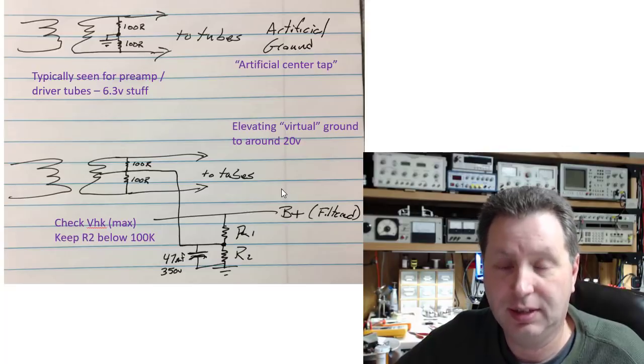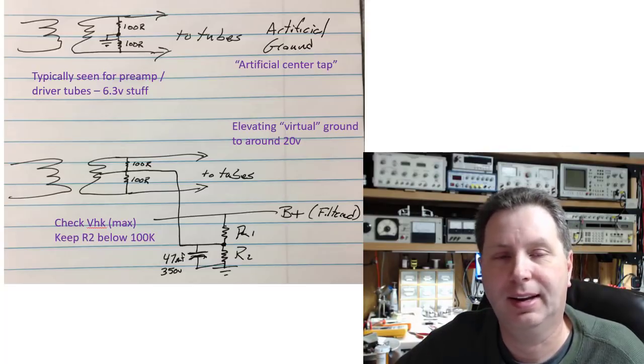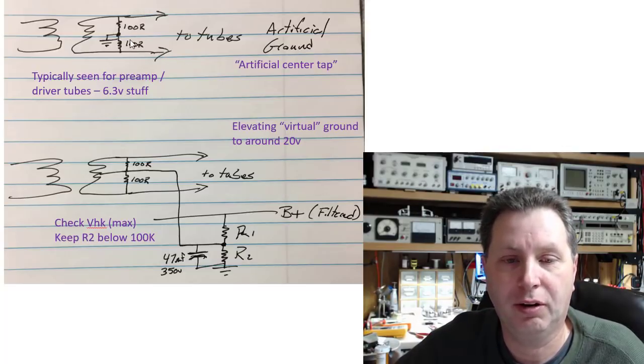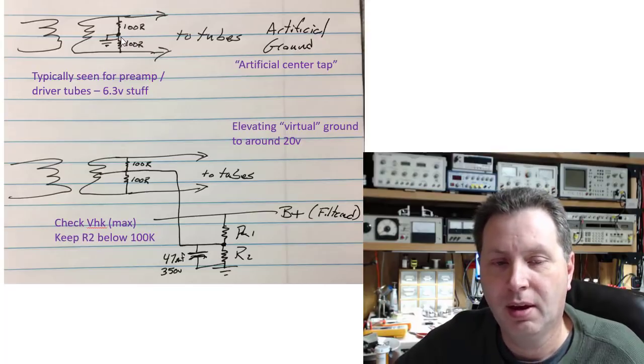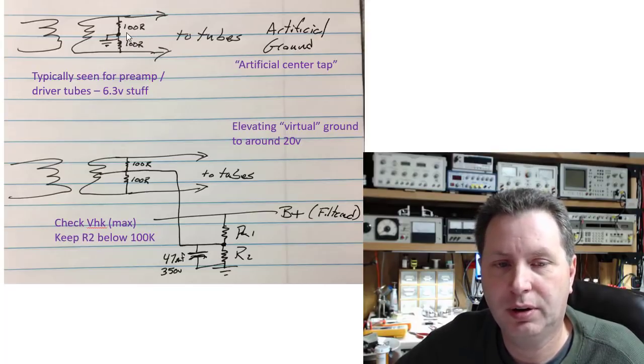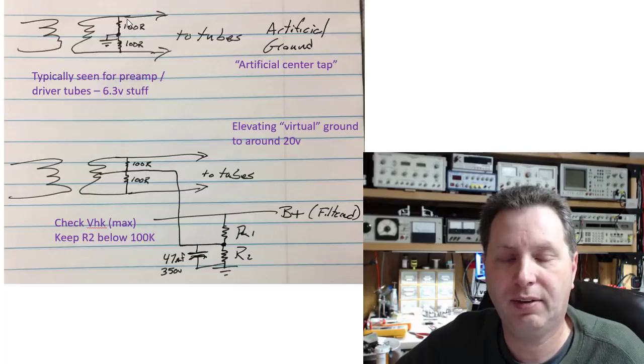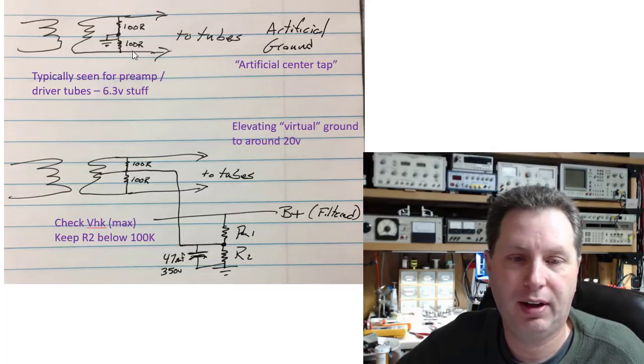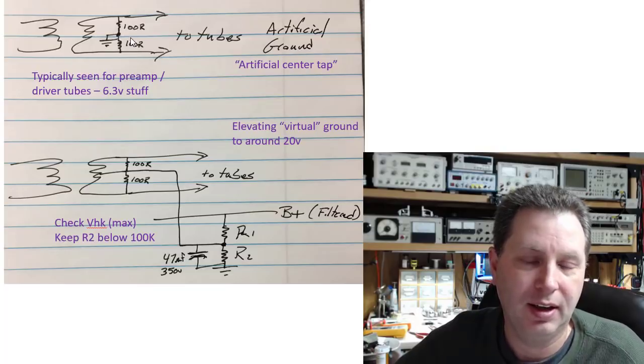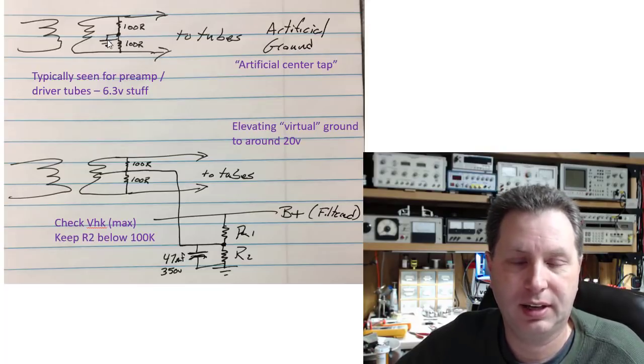And one other thing I have seen done—I can't remember exactly what they call this, a humdinger or something like that—but instead of using 200-ohm resistors here, you might actually put a pot here. So tie one side of a 500-ohm pot to one of these leads and another side of the pot to the other lead, and then take the center wiper and tie it to ground.